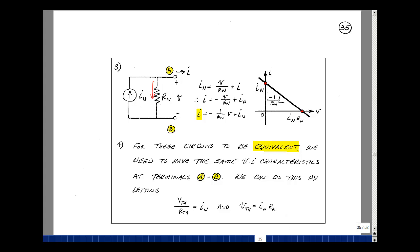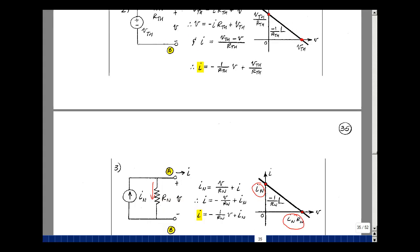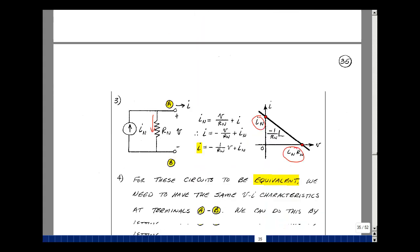For these two circuits to be equivalent, we're going to set this equal to the y-axis intercept in our previous calculation and do the same thing here for the x-intercept. So let's go back and look at those we need to be equivalent to each other. I'd have to pick I Norton to equal V Thevenin over R Thevenin, and V Thevenin equal to I Norton times R Norton. That's written on the bottom of the page here.